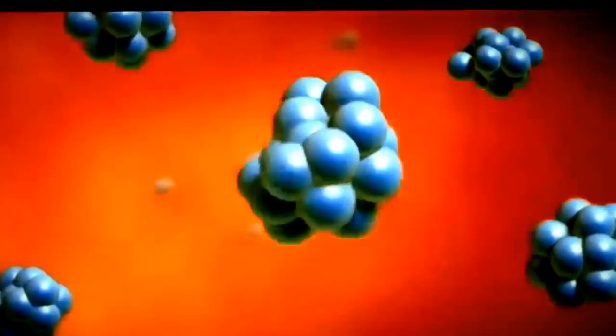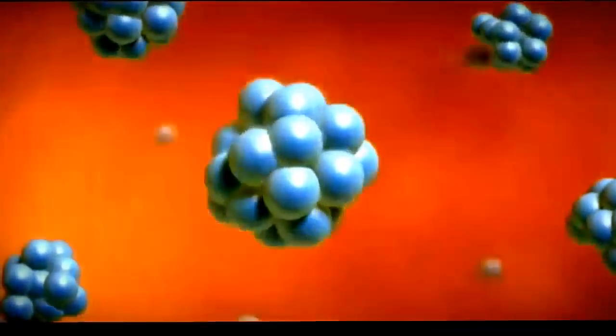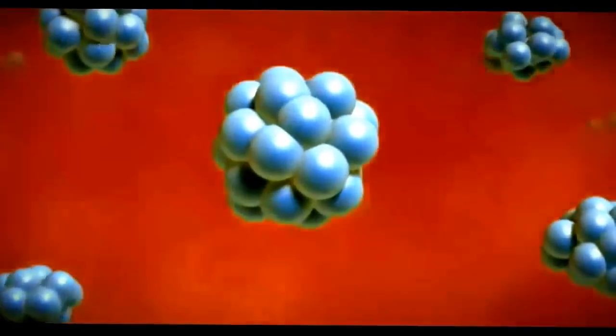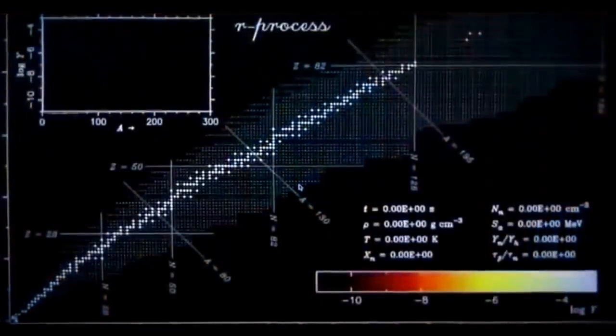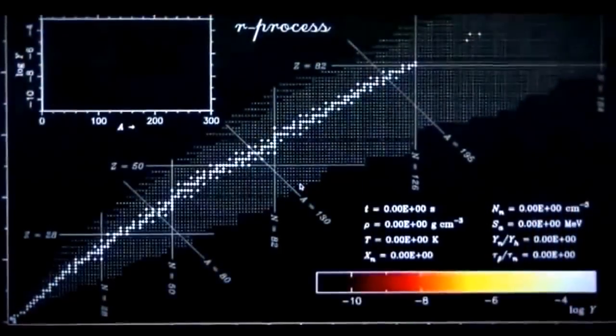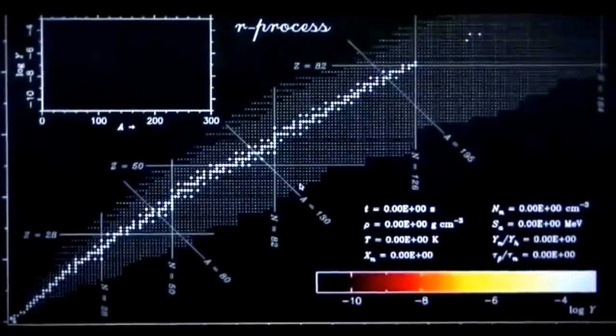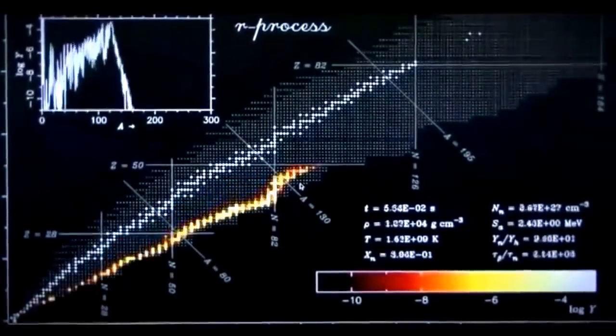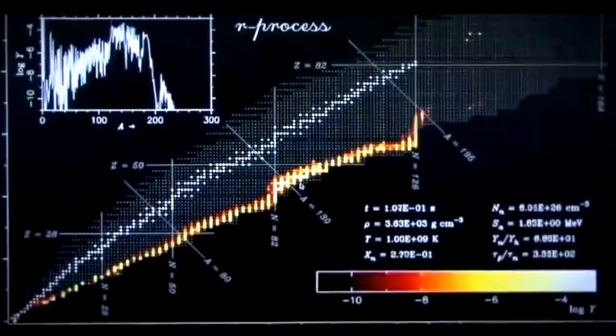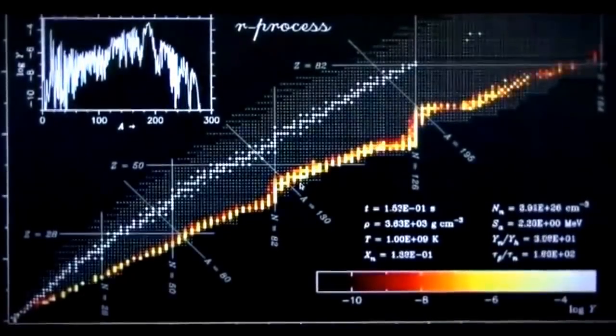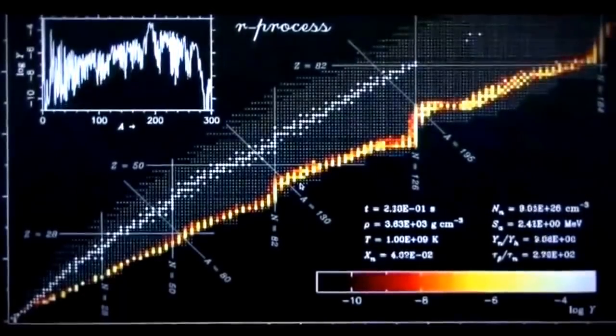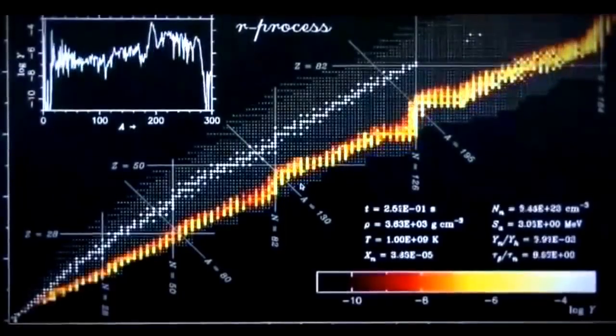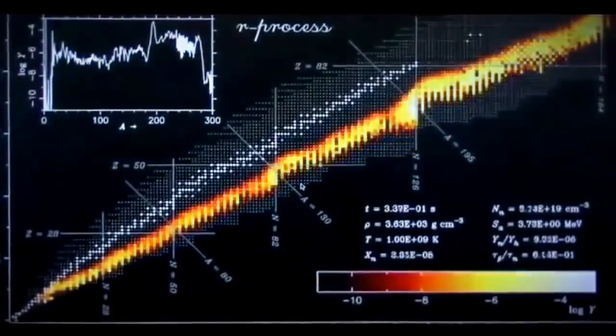Wanajo calculated the type and quantity of elements created at that stage. Consider what happens during the first 0.3 seconds after the explosion. The line extending towards the upper right of the graph indicates the volume of neutrons combining together. Heavy elements appear in a flash.